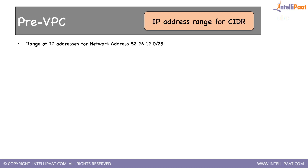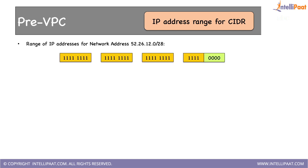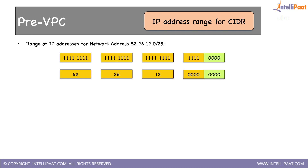Let's take one last example: 52.26.12.0/28 — only four bits available for hosts. I want you to pause this video and find out the minimum and maximum IP address range for this network. Keep 52.26.12 and the first four bits of the last octet as is — do not touch them as they belong to the network. We have 28 ones here for the network portion.